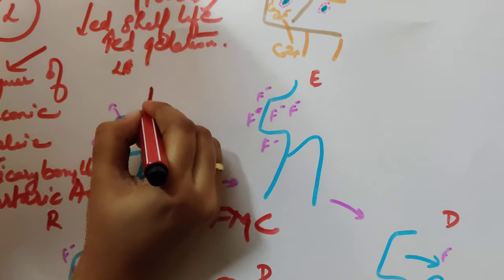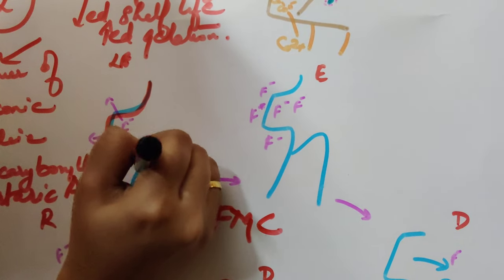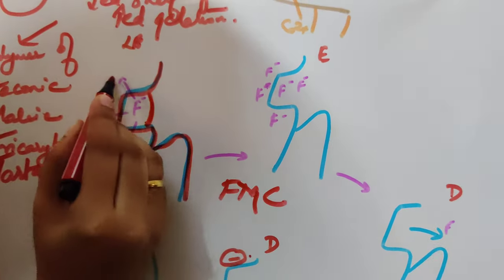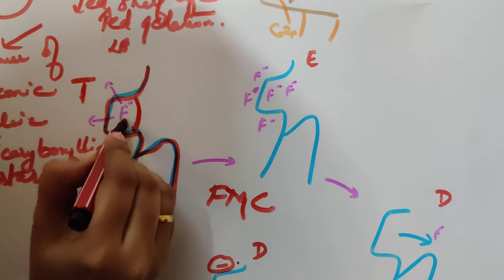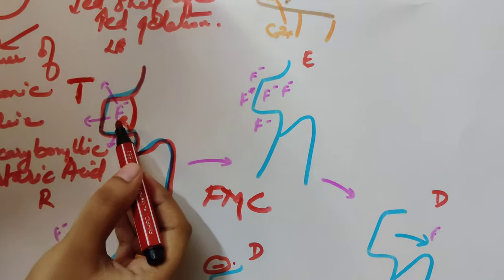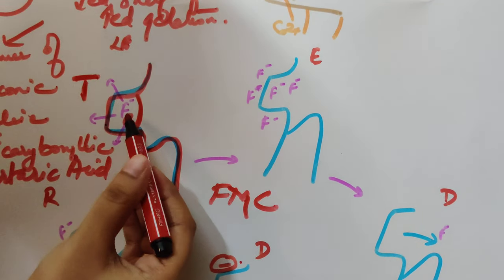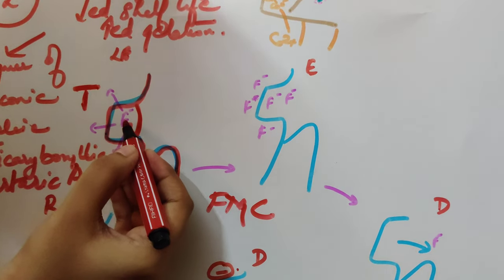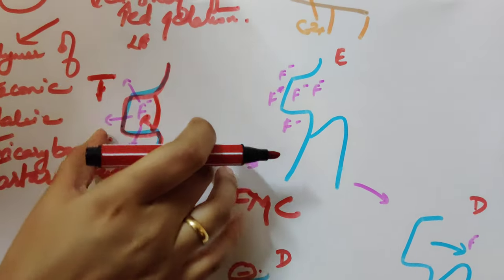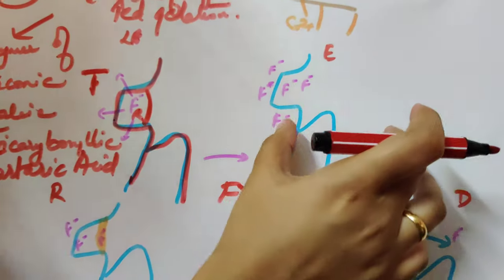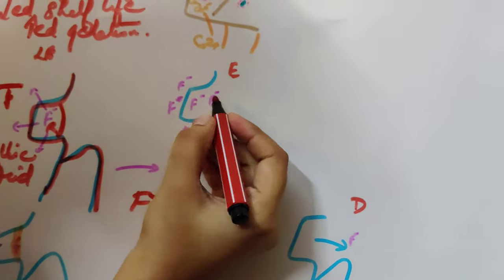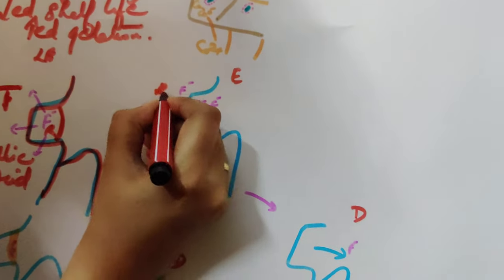In leaching phase, imagine this to be the tooth, the gums, and this is the restoration. Once you have filled it with the GIC, the fluoride ions will leach from the restoration into the tooth. Then it goes to equilibrium phase where the fluorine in the tooth and the restoration is going to be the same.